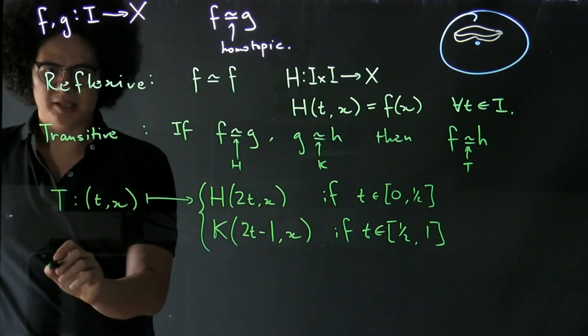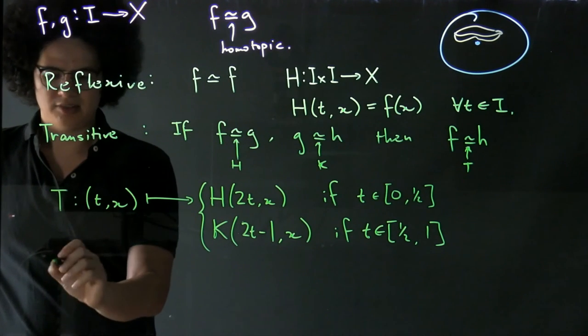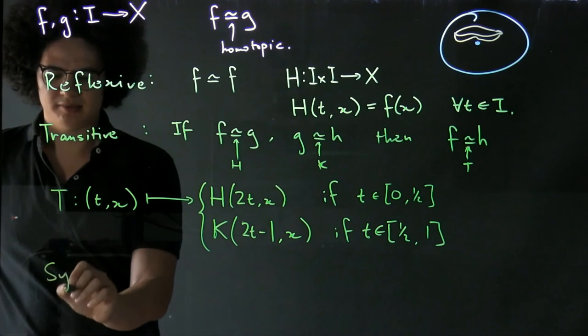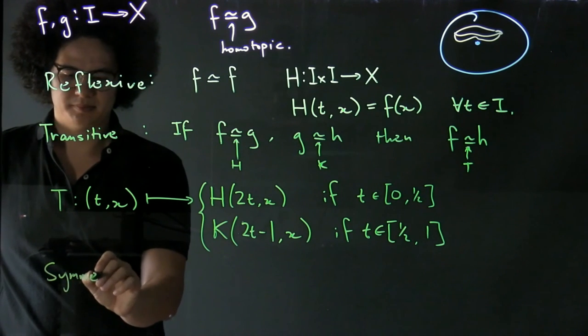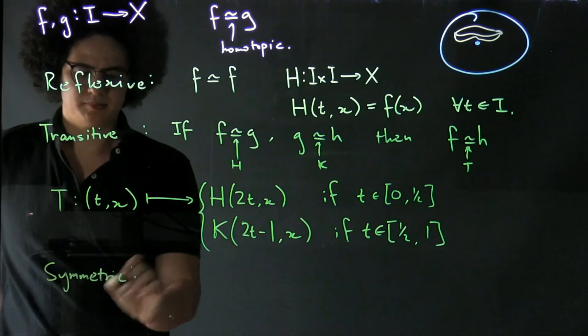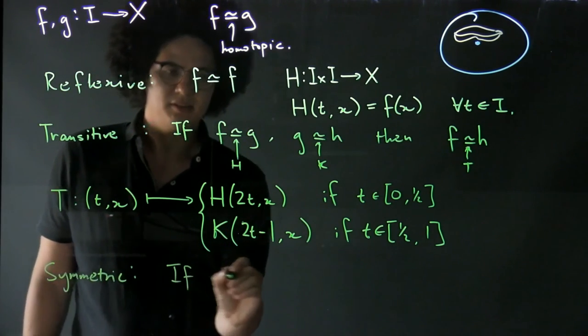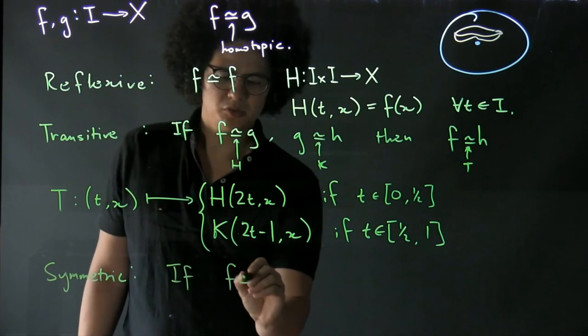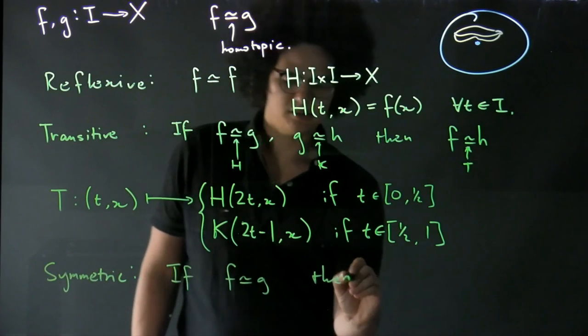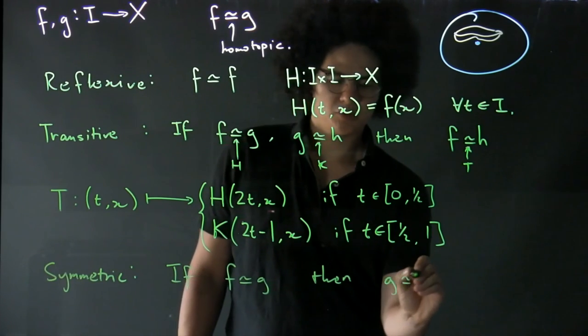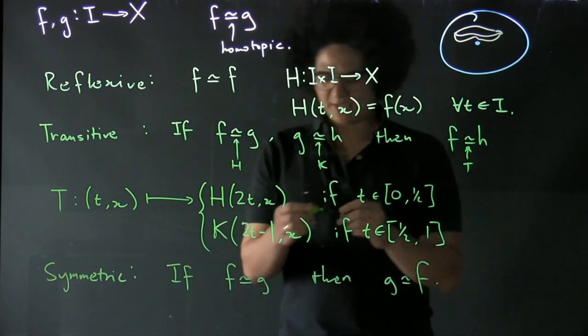And finally, we want to talk about, so we've done reflexive, transitive, and we need to do symmetric. So we want that if F is homotopic to G, then G is homotopic to F.